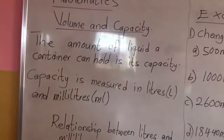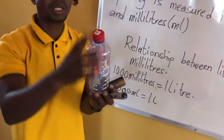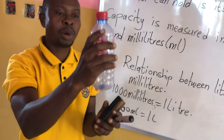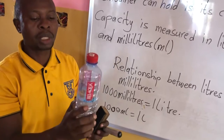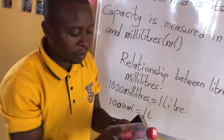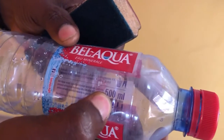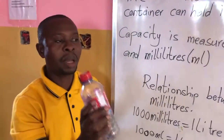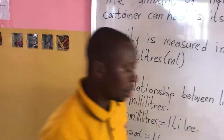Let's look at this bottle as an example. When we fill this bottle full, the amount of water we fill it with is its capacity. This bottle is labeled 500 ml, which means its capacity is 500 ml.